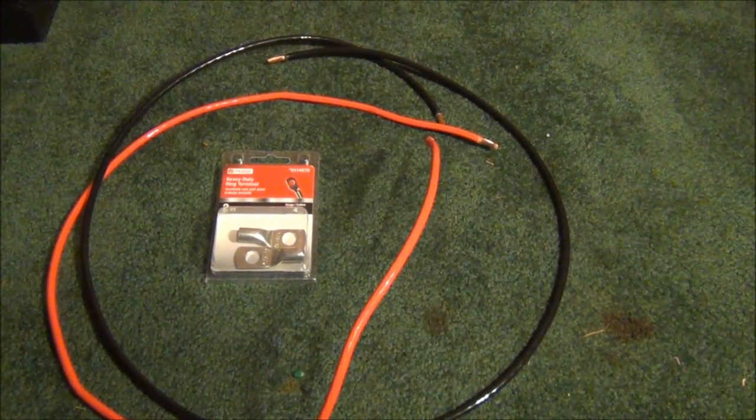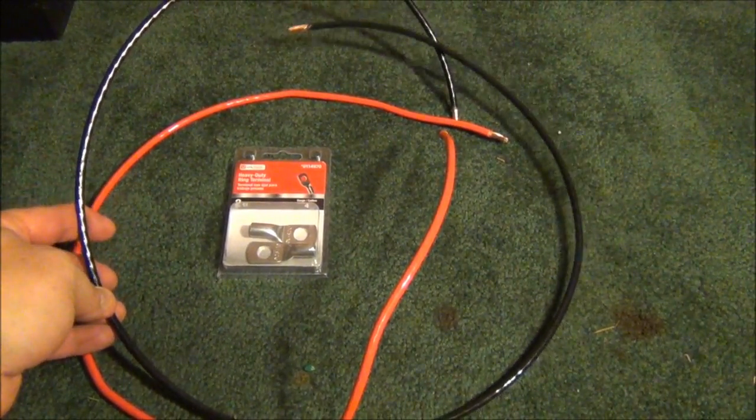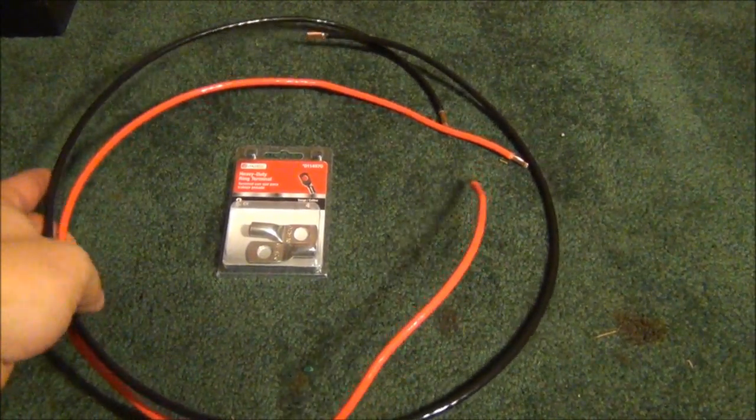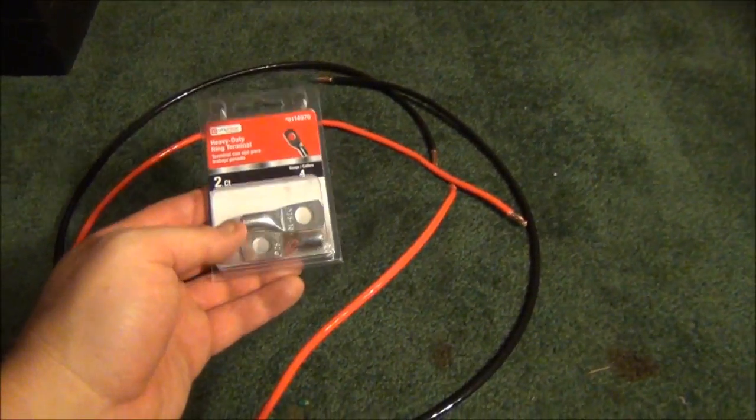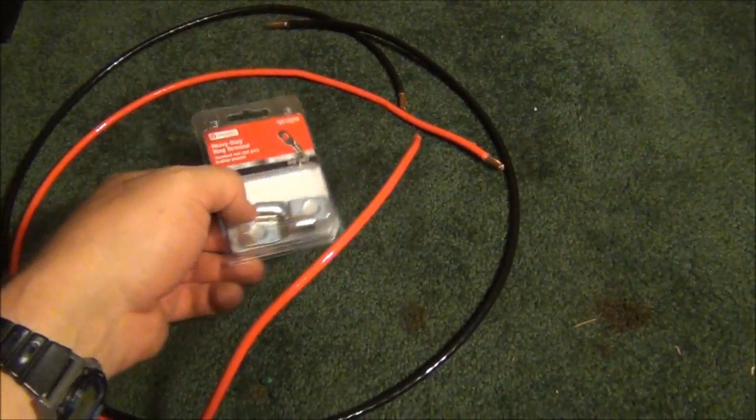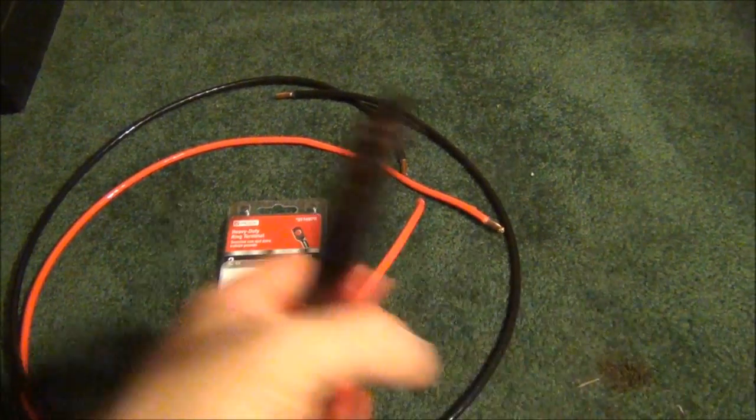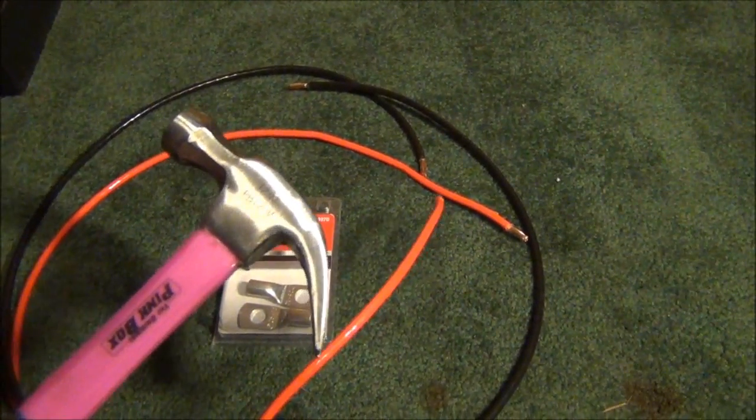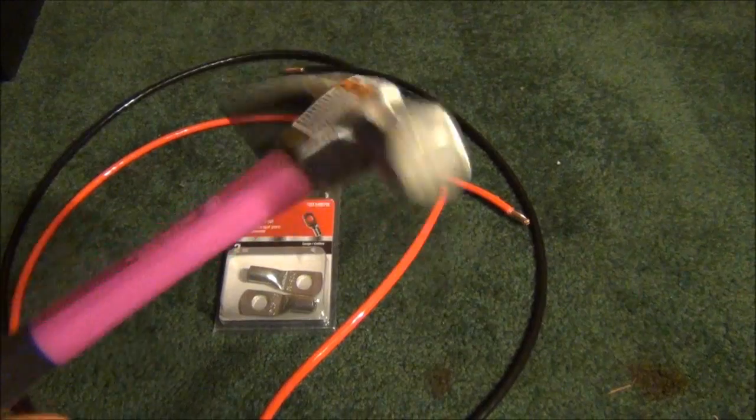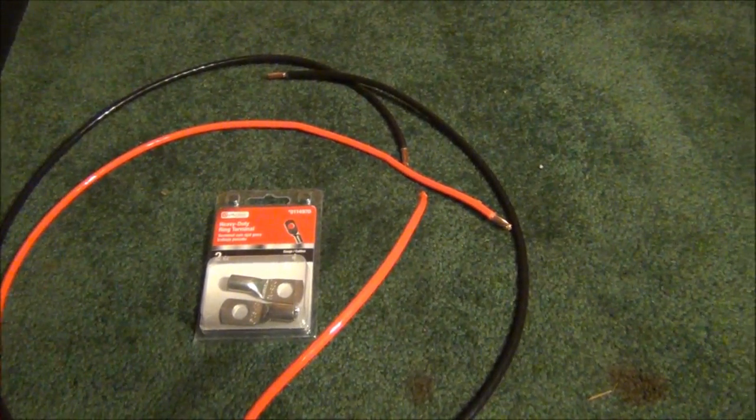A few other things that you're going to need for this project are some wire. I'm using 8 gauge wire that I got at Lowe's. And you're going to need some heavy duty ring terminals, and that's going to connect to the ends of the wires to connect to all the different things. You're going to need some wire cutters and a crimper. I'm using the wife's crimper today. See? Pink box. So shh, don't tell her.